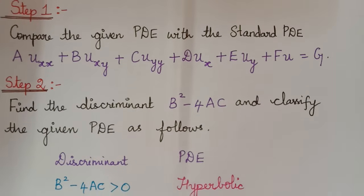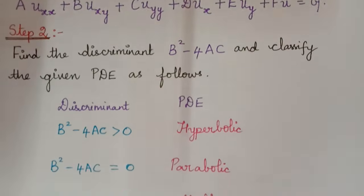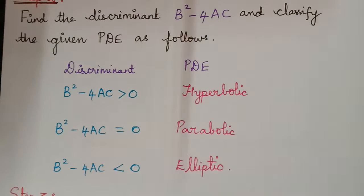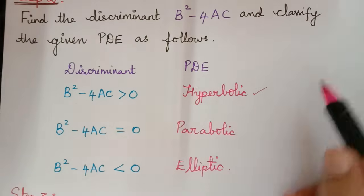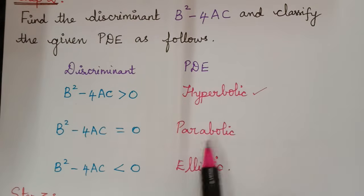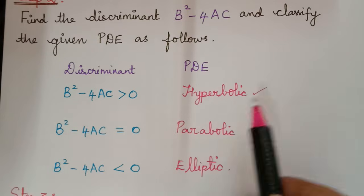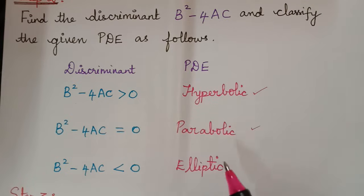If the discriminant value is greater than 0, then the partial differential equation will be of hyperbolic type. If it equals 0, it will be of parabolic type, and if B squared minus 4AC is less than 0, it will be of elliptic type.